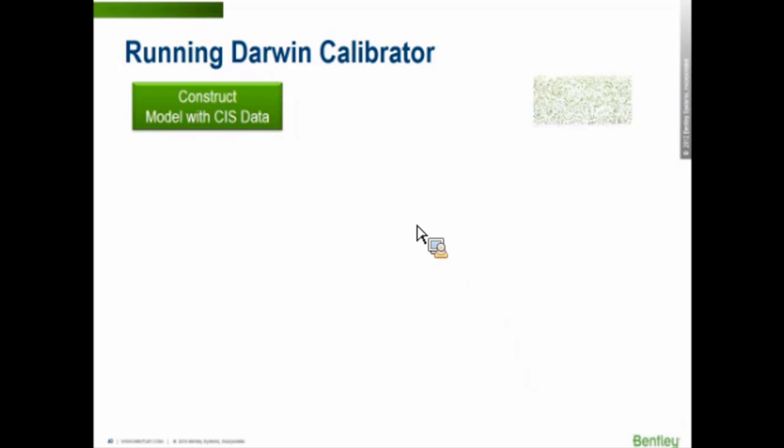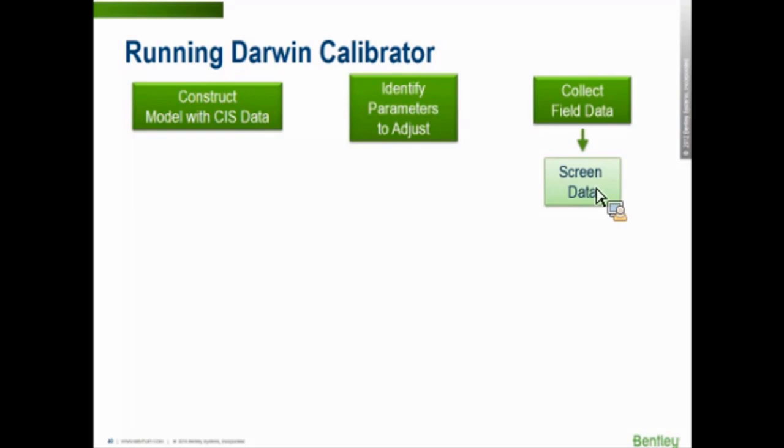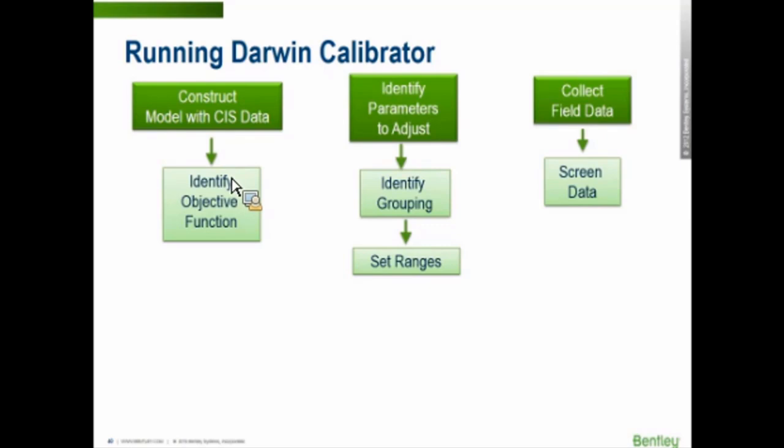This is the overview of the automated calibration process. You must first start out with a model that runs properly. In this case, controls. You need to have good controls. You need to have the tanks, proper tank size if you're running extended period simulation. You need to make sure there aren't any error messages or warnings that aren't. Then you need to go collect field data. Collect the customer information system data. Screen the field data. Make sure the field data is correct. Identify whatever parameters you want to adjust: C factors, demand, valve state. Group pipes together. Group nodes together. Set the ranges for the C factors. Set the ranges for demand. And then we'll create the objective function for the model. What parameters we want to adjust. The objective function is the, remember that's the least squares differences one. There were the three different variables we would pick from. Set any of the optimization controls that we needed to. Run Darwin Calibrator.